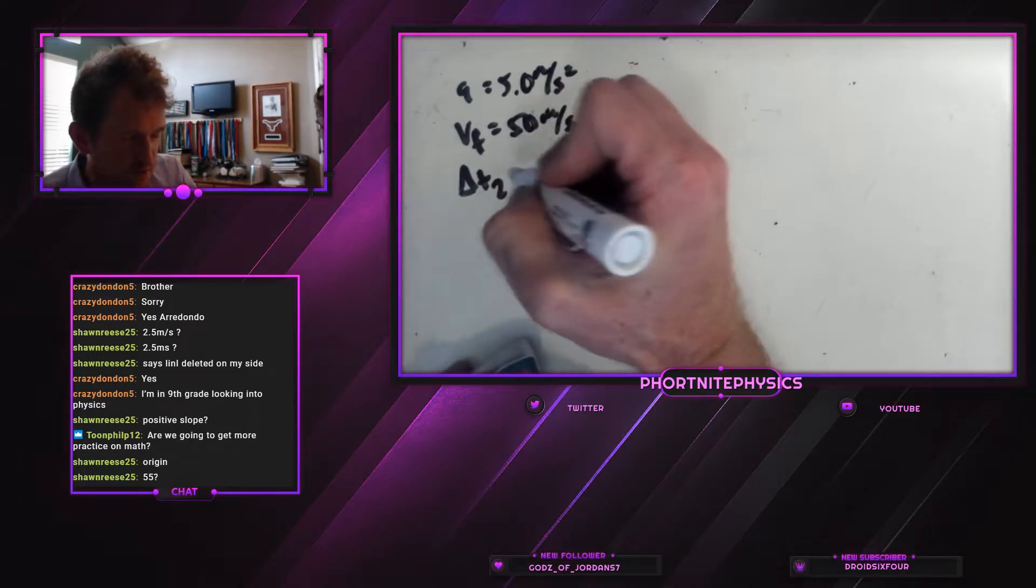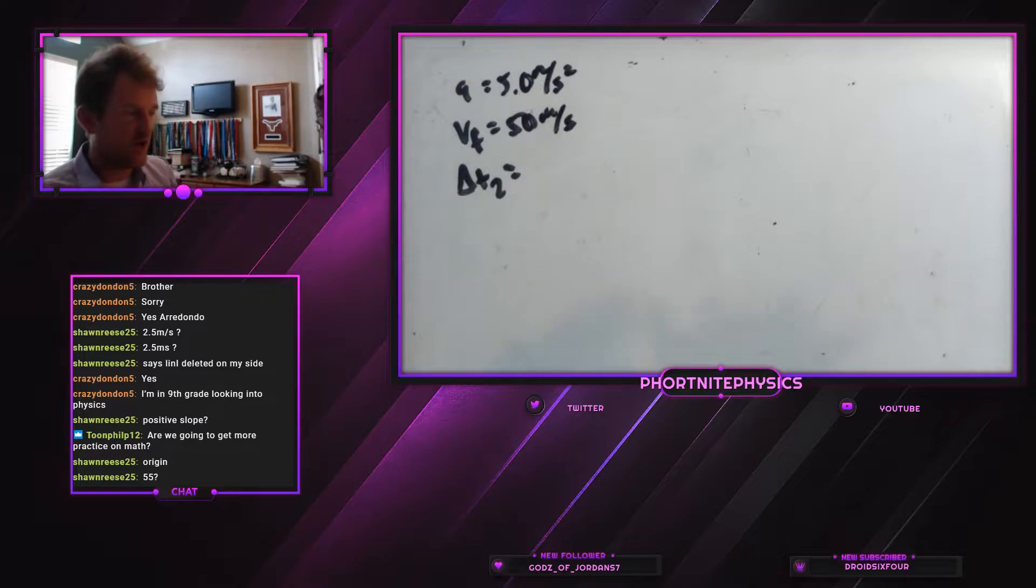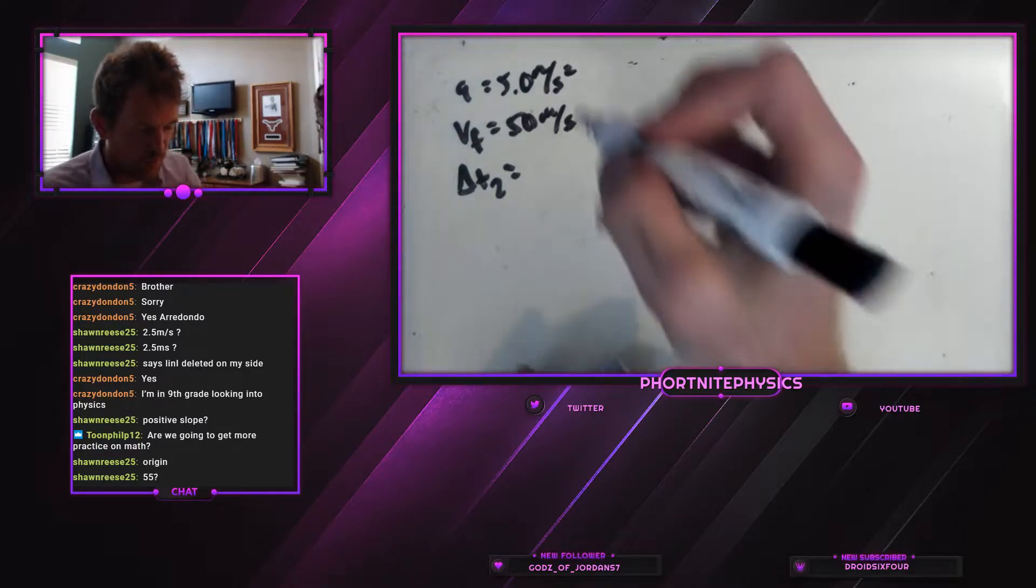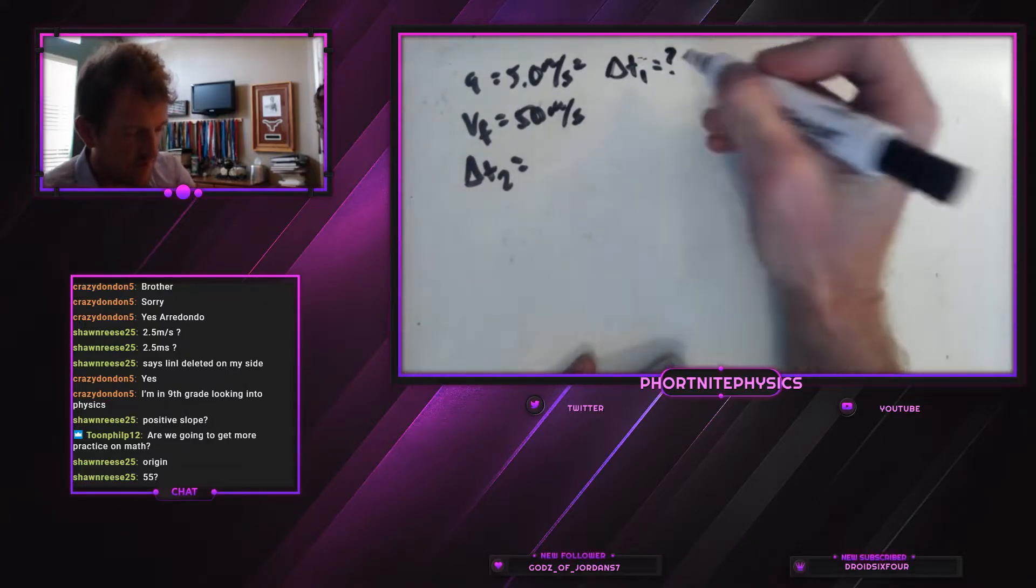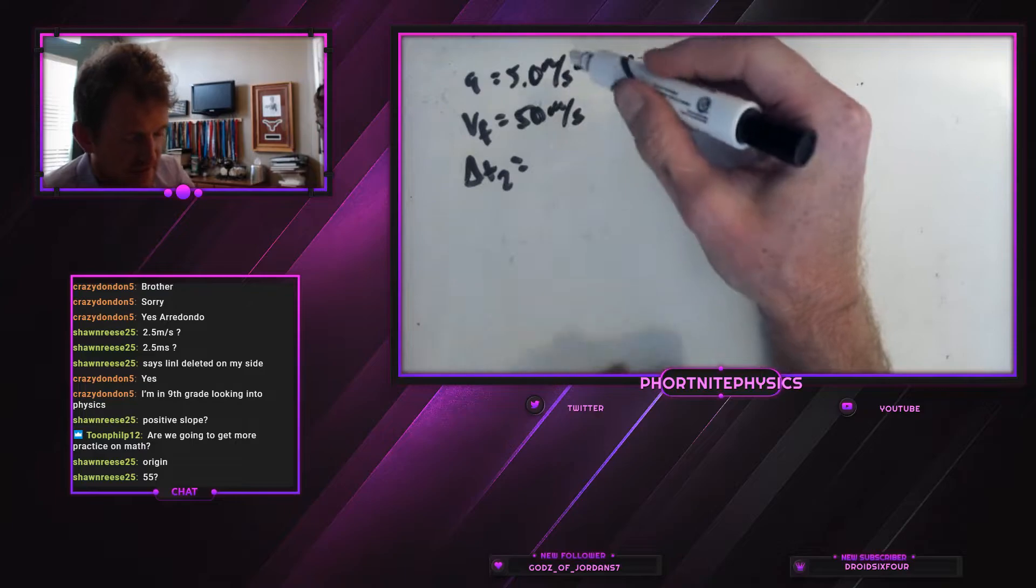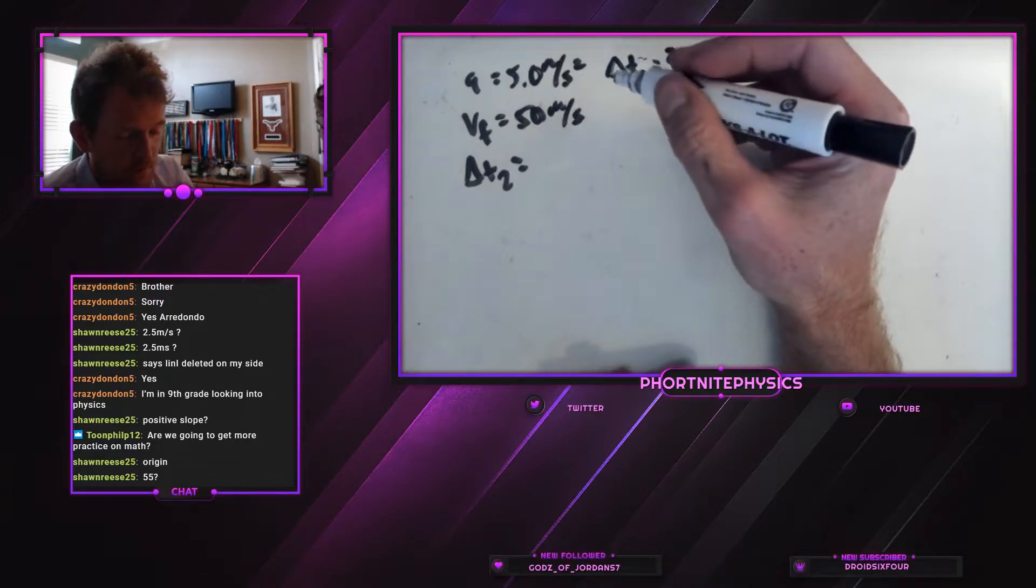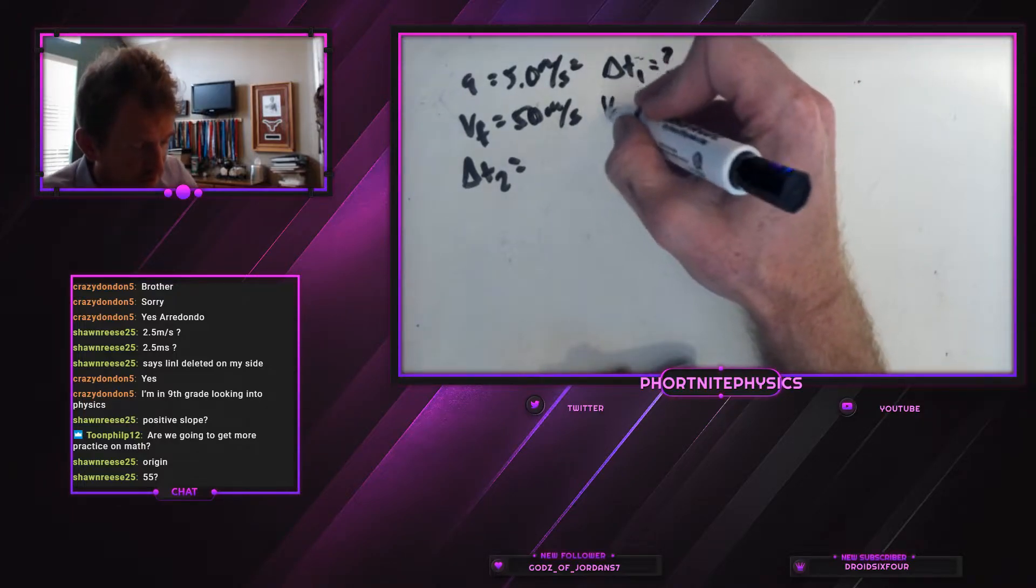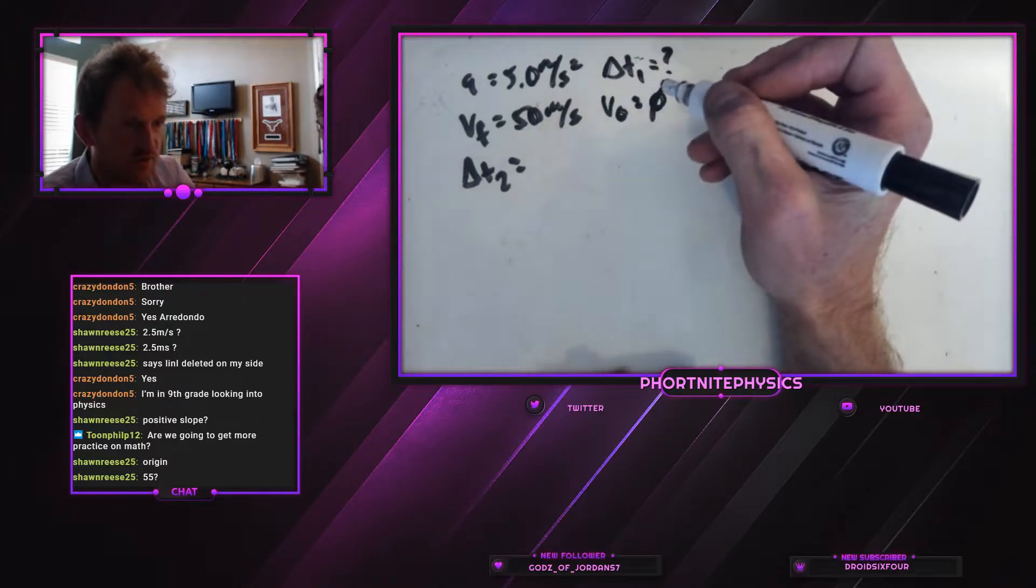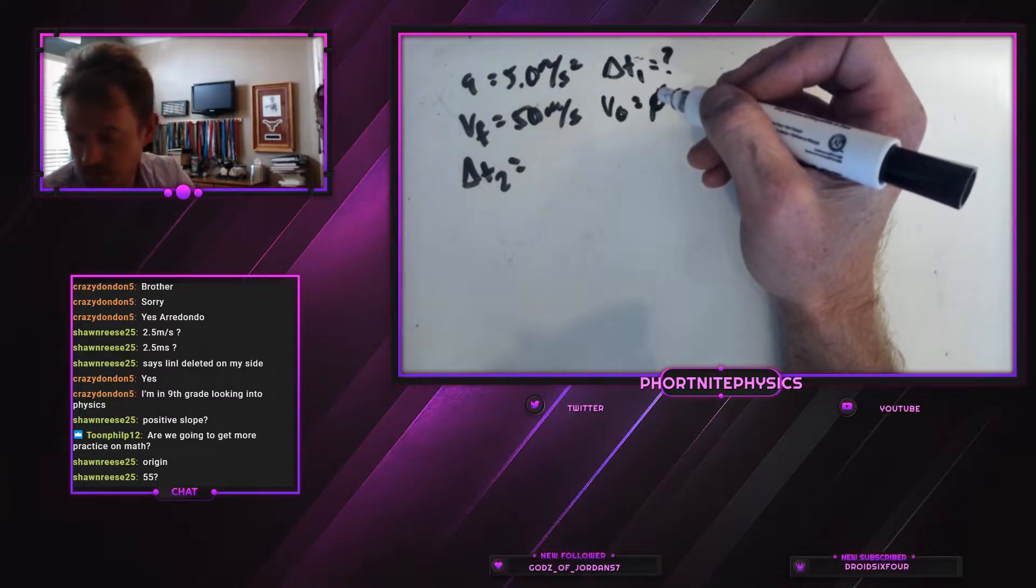Let's say time 2 because we can already tell this is going to be broken into a couple of chunks. We don't know how long it takes first. We don't know our first delta time, how long it takes to accelerate up to 50 meters per second. It starts from rest, you're right, and we know our initial velocity is zero.